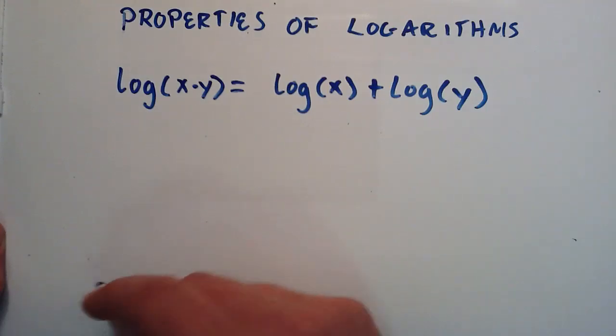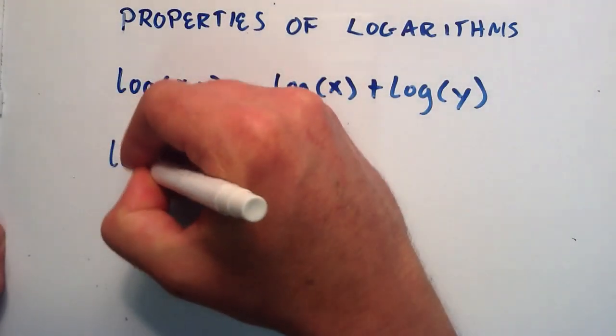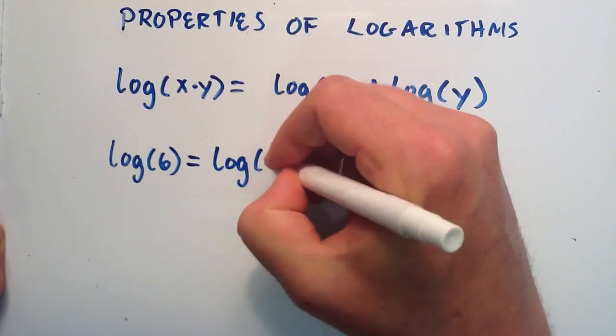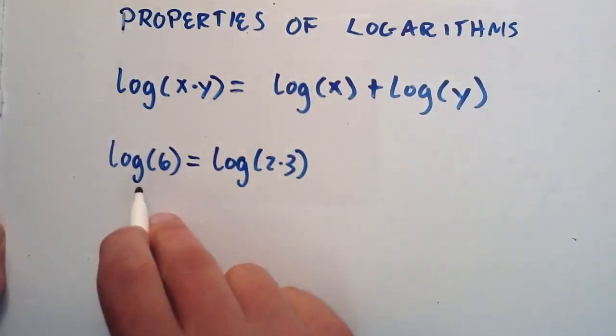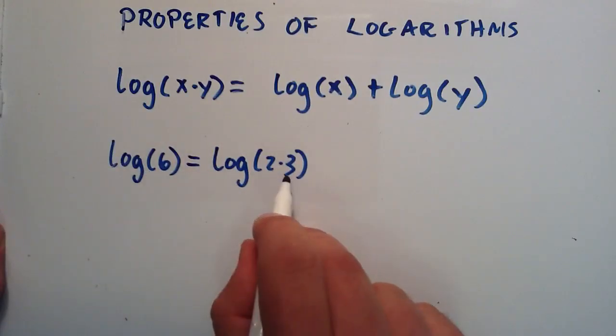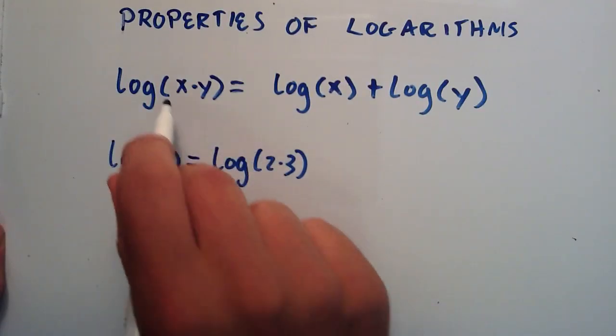So for example, if we have the logarithm of 6, we could rewrite that as the logarithm of 2 times 3. So what I did here is 2 times 3 is equal to 6, so really this is the logarithm of 6. So this gets us to this first step here.